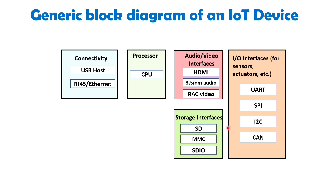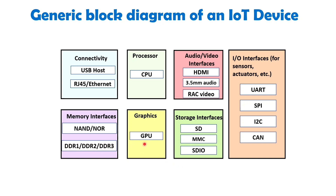Next is storage interfaces. It uses SD (Secure Digital), MMC (Multimedia Card) and SDIO (SD Input and Output) to store data generated by IoT devices. These interfaces provide a means to efficiently store and retrieve data, ensuring that important information is preserved for further analysis or reference. Other components such as DDR (Double Data Rate) and GPU (Graphical Processing Unit) also play a significant role in controlling the activities of an IoT system. DDR facilitates fast and efficient data access while GPUs are specially designed to handle intensive graphics processing tasks.